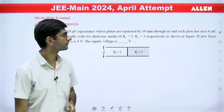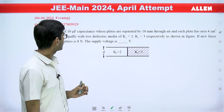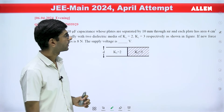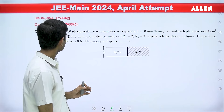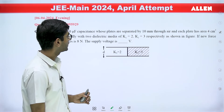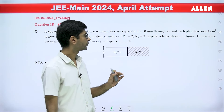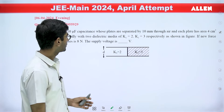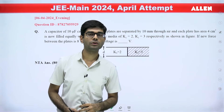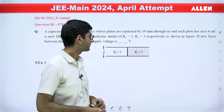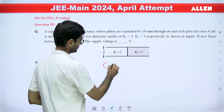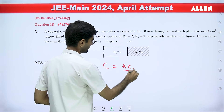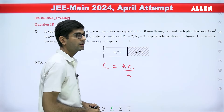The second question: a capacitor of 10 microfarad capacitance whose plates are separated by 10 millimeters through air, and each plate has area A, is now filled equally with two dielectrics of dielectric constant 2 and 3 respectively as shown in the figure. If the new force between the plates is 8 Newton, then what is the supply voltage? Now, the discrepancy in this question is that the capacitance, if we consider the medium to be air, is given by A·ε₀/D.